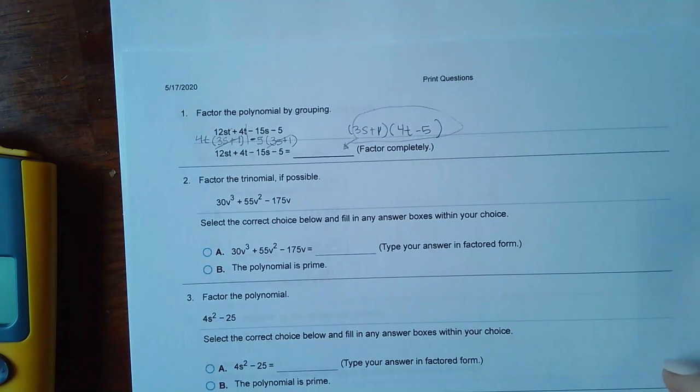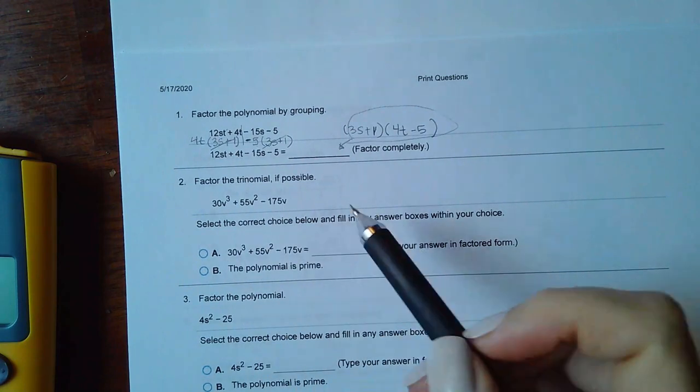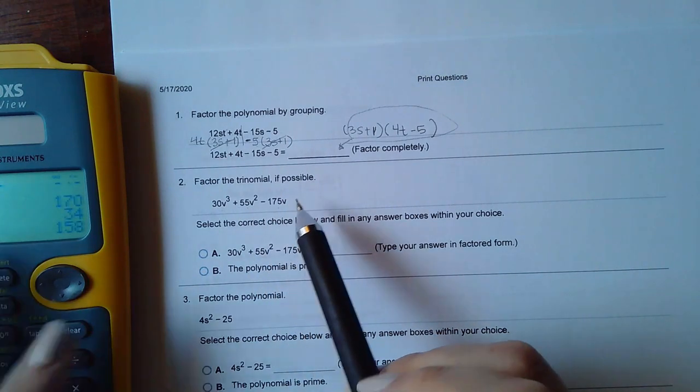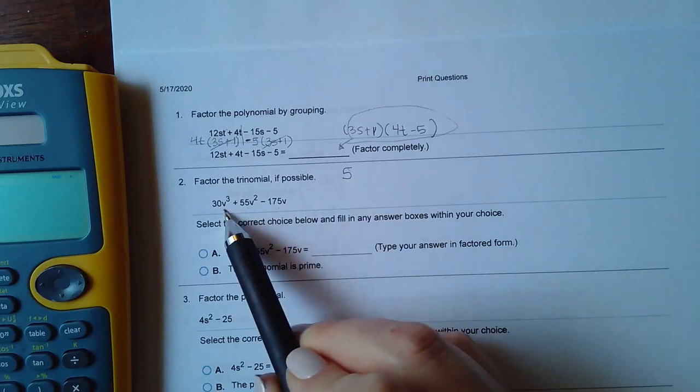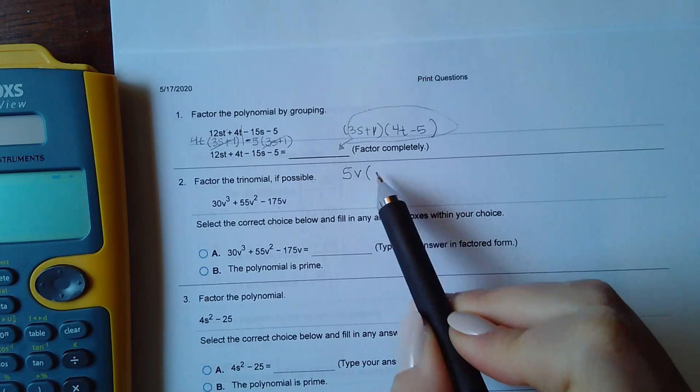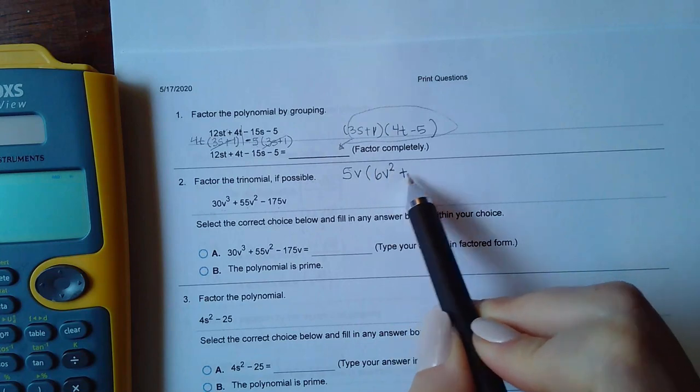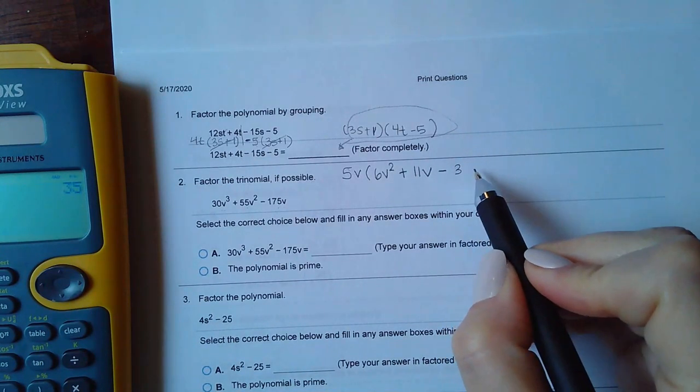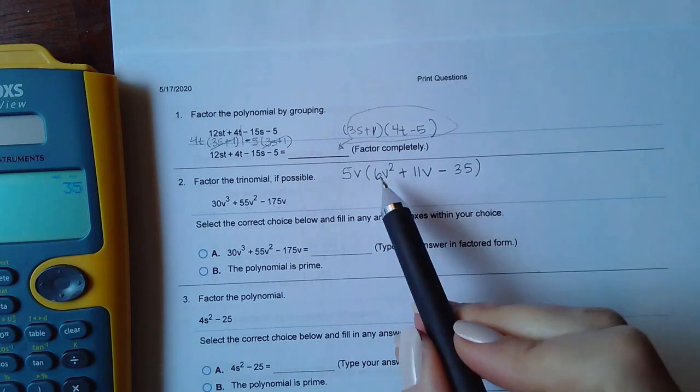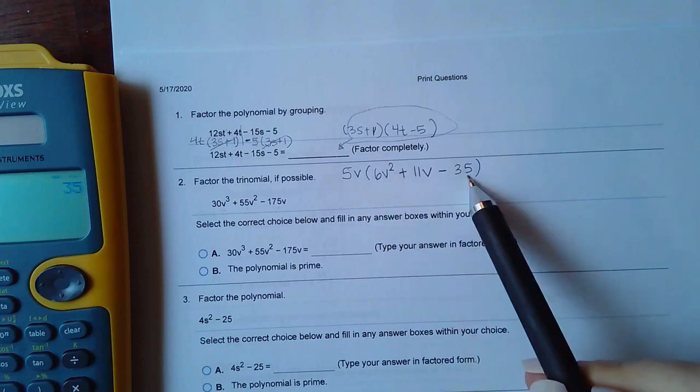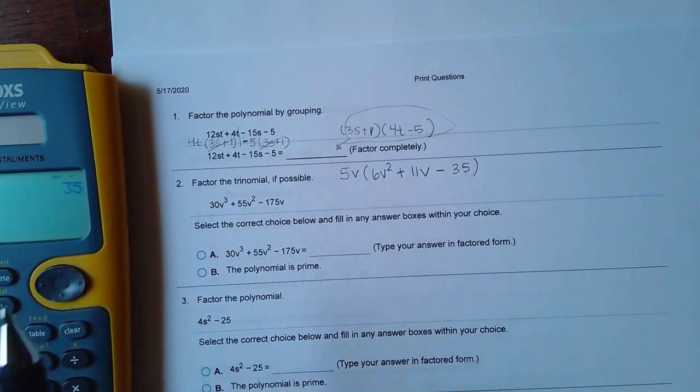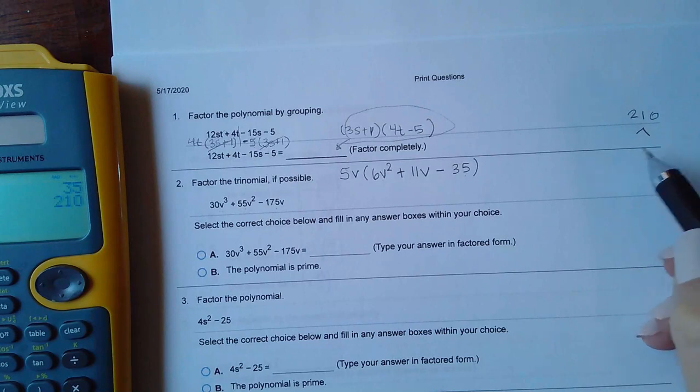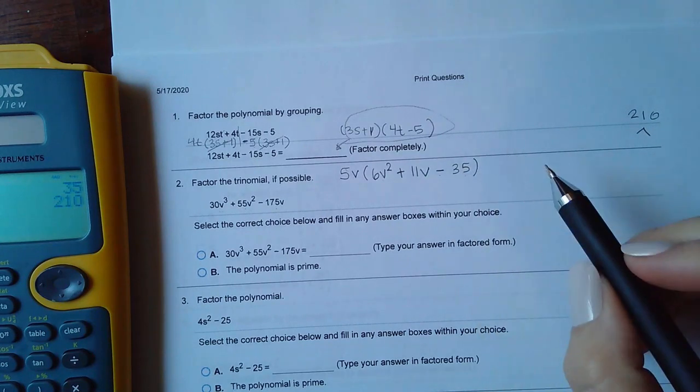Now for number 2 it says factor the trinomial if possible. First thing you want to do is see if there's a GCF. I do notice that all the numbers end in 5 so 5 might be my GCF. If I factor out a 5 and then they all have at least 1v so I can factor out a 5v, that would give me 6v² + 11v - 35. Then we would have to factor further this part of the polynomial so we might have to do 6 times 35 which is going to be a rather large number and then find all the factors of that that will subtract to give me 11.